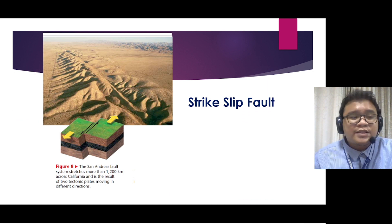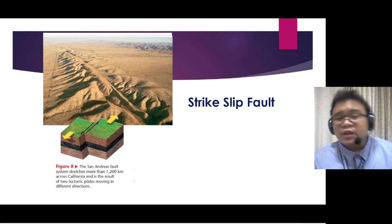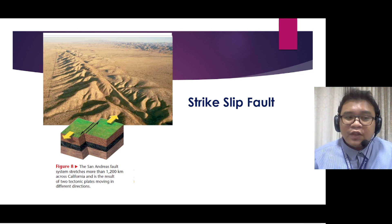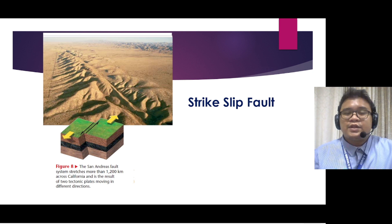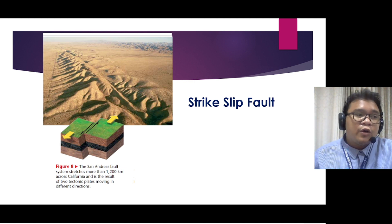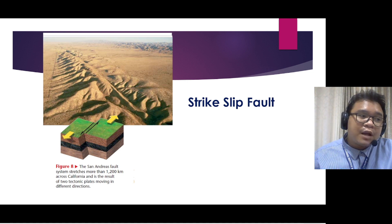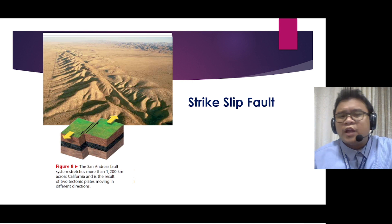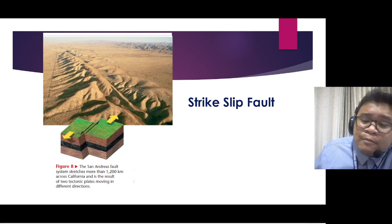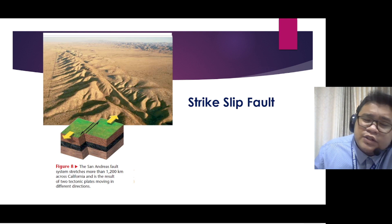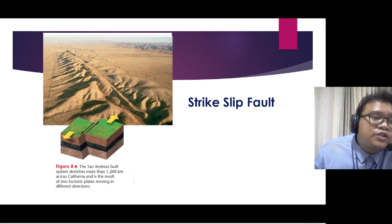Another type of fault is the strike-slip fault, caused by shear stress. In the shear stress, rocks instead of colliding or diverging with one another actually slide past each other horizontally. They got their name because they slide or slip parallel to the direction of the length or strike of the fault. The strike-slip fault is common in areas where transform plate boundaries occur — for example, the San Andreas Fault in California, which stretches over 1,200 kilometers and is the result of two tectonic plates moving in different directions.